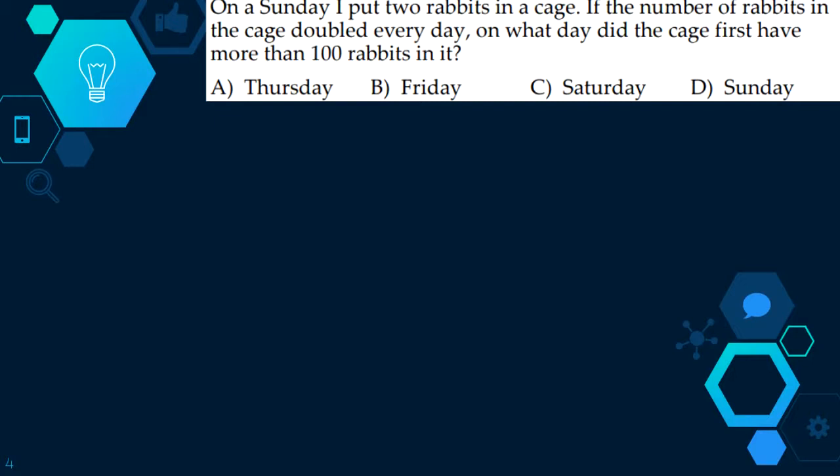Our next question is, on Sunday, I put two rabbits in a cage. If the number of rabbits in the cage doubled every day, on what day did the cage first have more than 100 rabbits? This is pretty simple. We can just start off with two, and double two is four, double four is eight, double eight is sixteen, double sixteen is thirty-two, double thirty-two is sixty-four. And if we add those all up, we get a hundred and twenty-six. If we just stopped at thirty-two and didn't add sixty-four in the end, we would have got only sixty-two, that's less than a hundred. Two plus four plus eight plus sixteen plus thirty-two plus sixty-four, that's six numbers getting added up. So it would be six days after Sunday, which is C, Saturday.